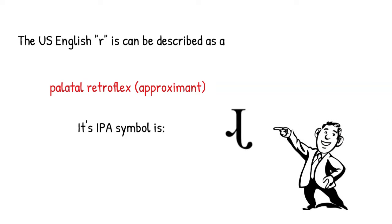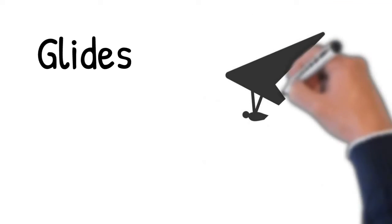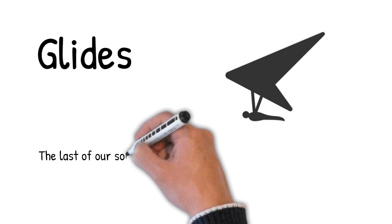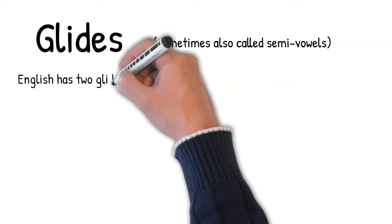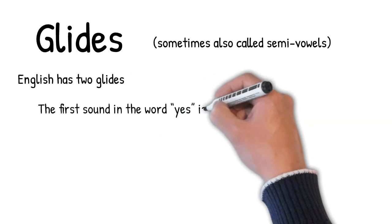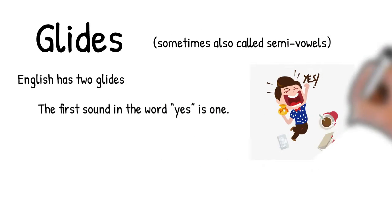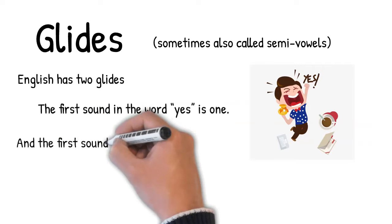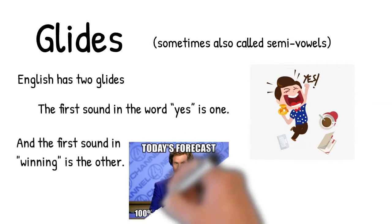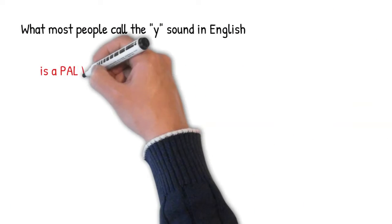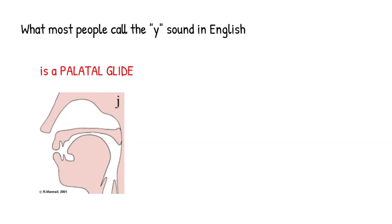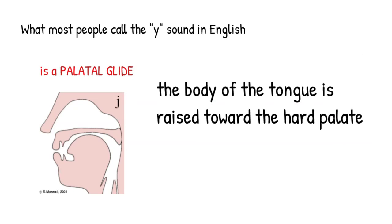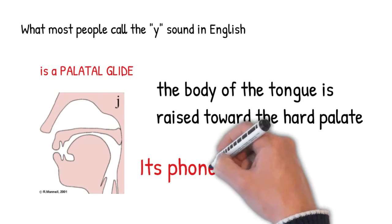We've now arrived at the glides, the last stop on our manner of articulation journey. Glides are also sometimes called semi-vowels and English has two of them. The first is what people think of as the Y sound in words like yes. And the second is the W sound at the beginning of words like winning. The sound that most people think of as the Y sound in English is actually a palatal glide. The way that we produce it is by raising the body of the tongue towards the hard palate. The phonetic symbol for the palatal glide is the J.